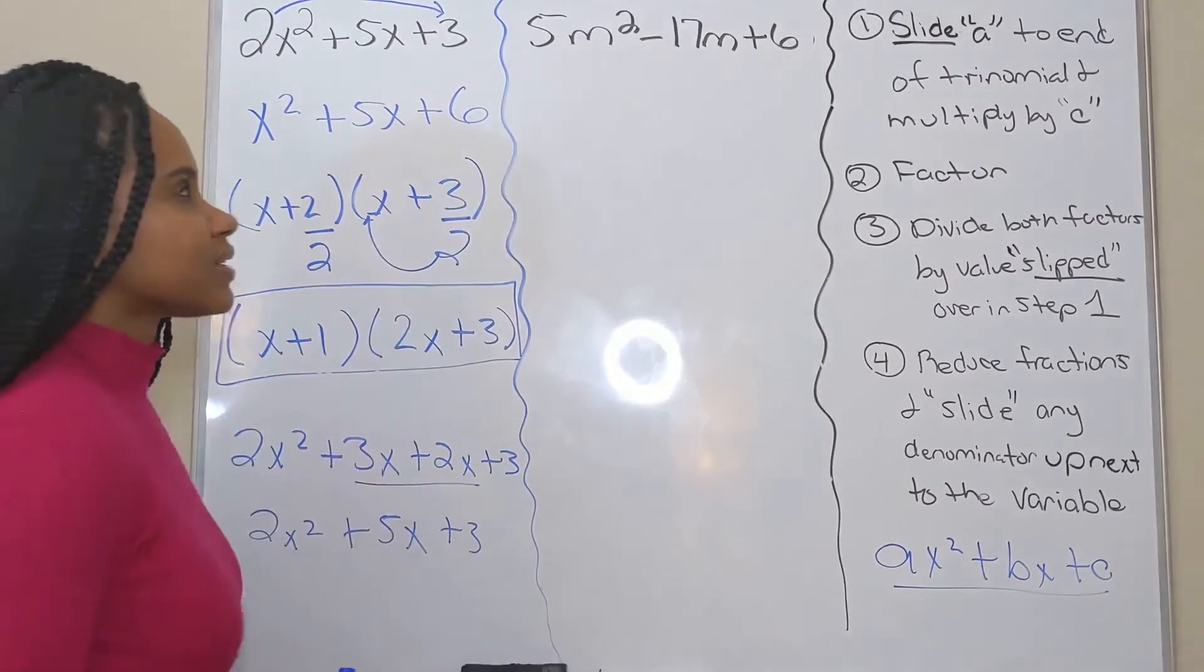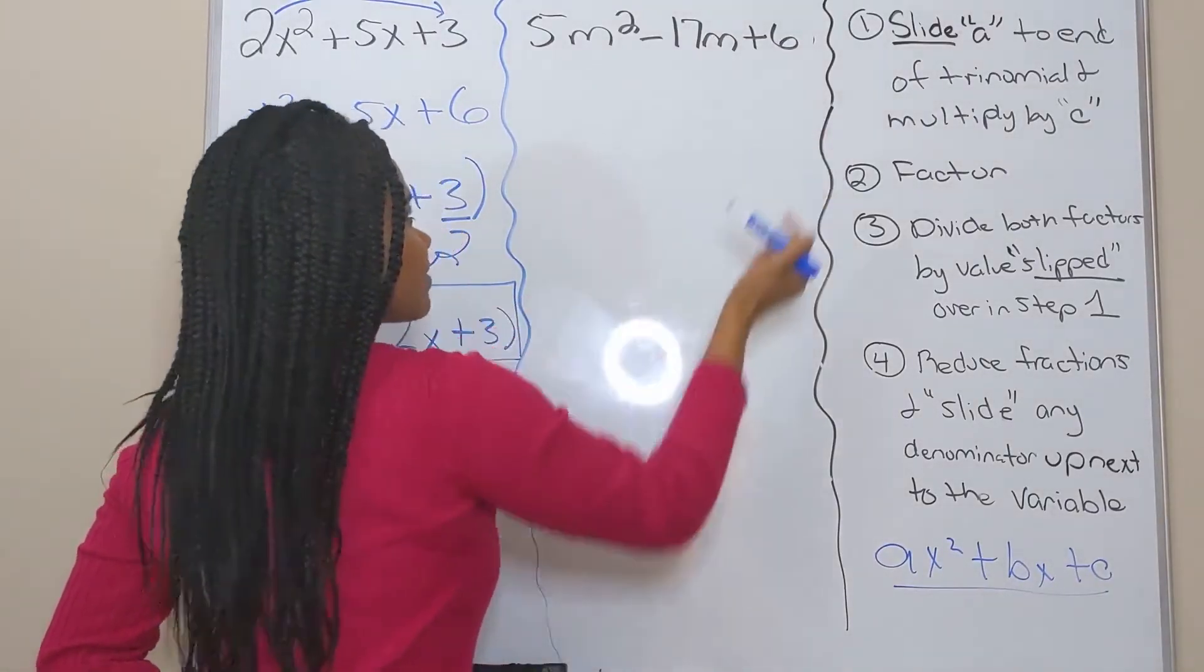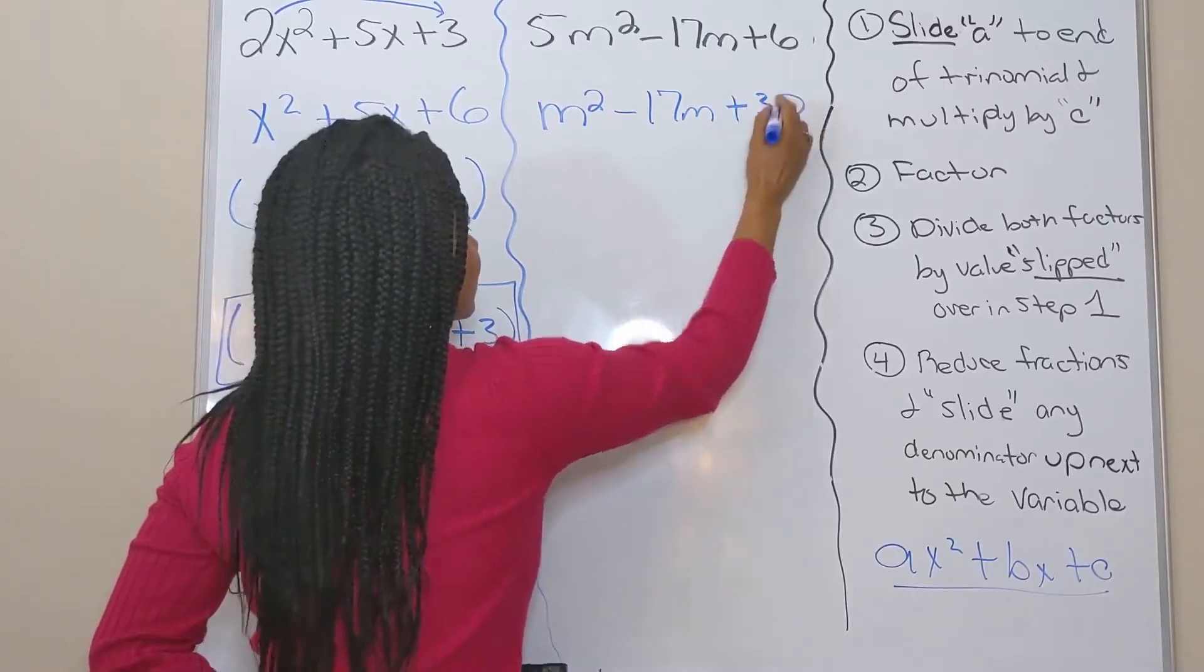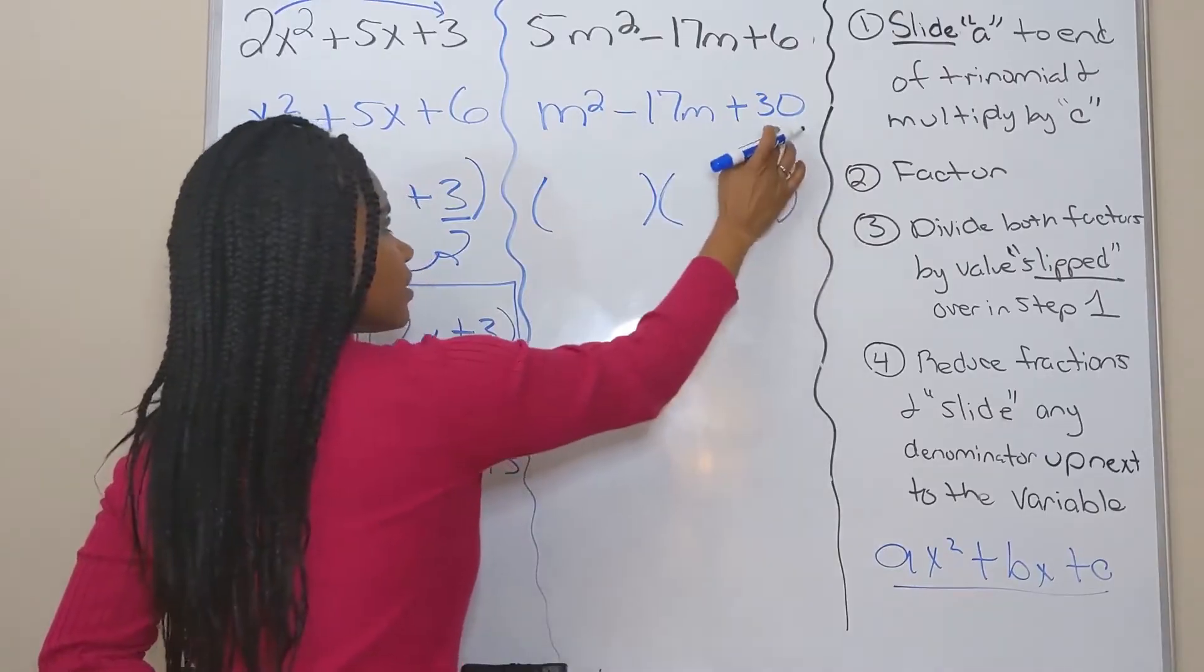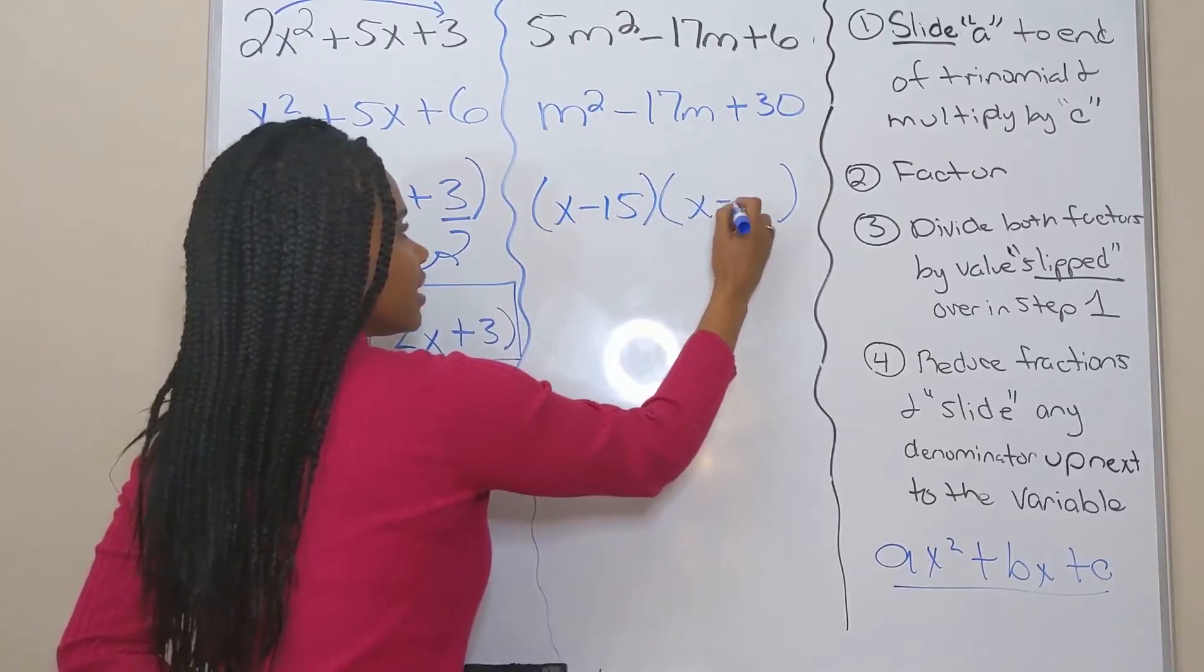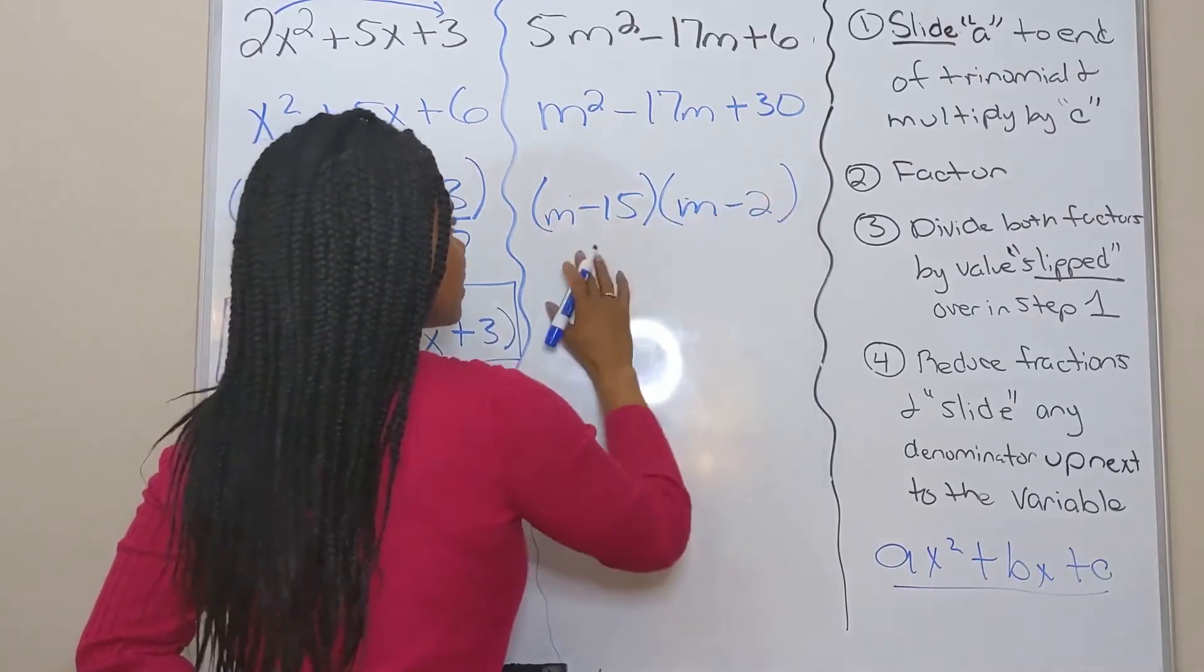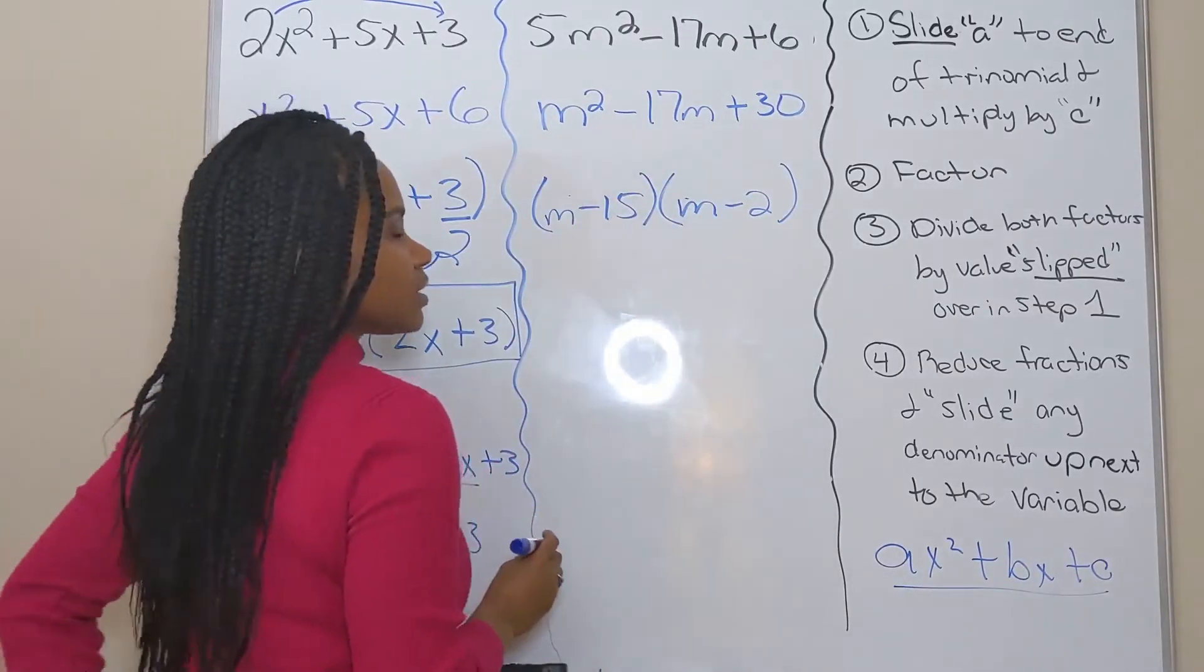All right, let's try this one. You want to slide five over to six and multiply. Five times six is 30. So that's m squared minus 17m plus 30. All right, factor. Factors of 30 that have a sum of 17 are negative 15 and negative two. And I'm putting x and it should be an m. M minus two. All right, when I multiply, I get 30. But when I add them, I get negative 17.